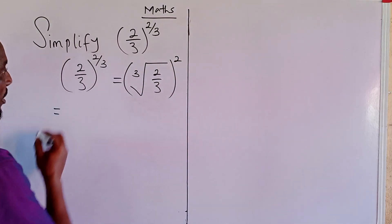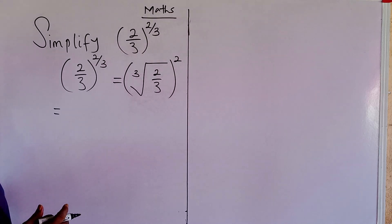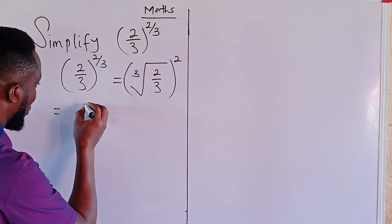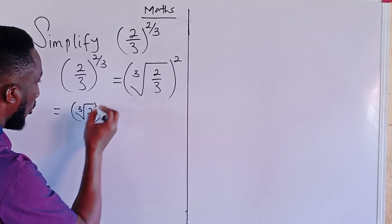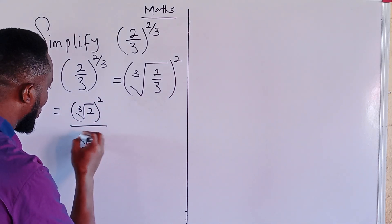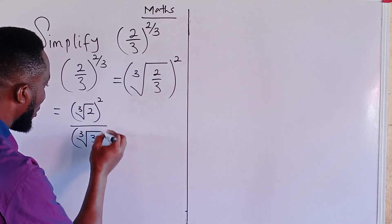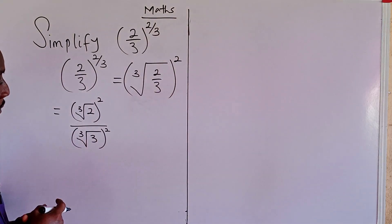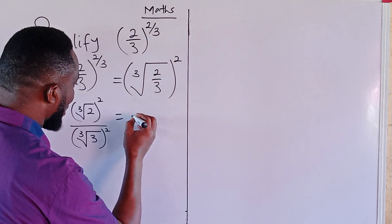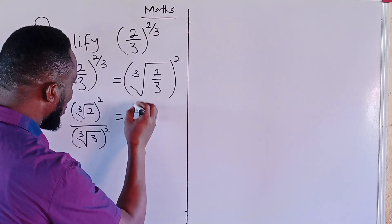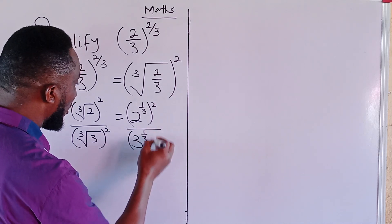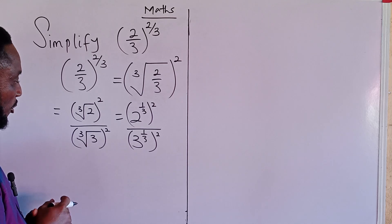The next step is to use the division rule of exponents. This gives us the cube root of two whole squared divided by the cube root of three whole squared. Writing the radicals in exponent form, we get two to the one-third squared, divided by three to the one-third squared.